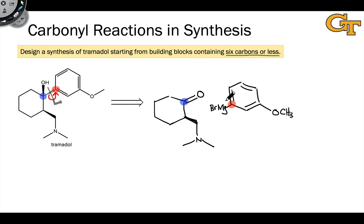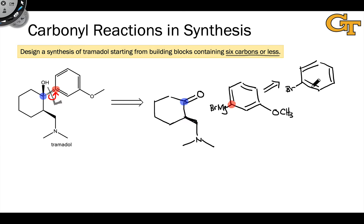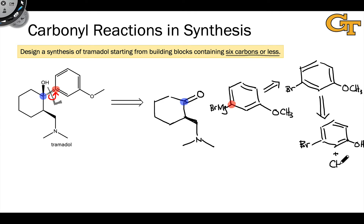Let's deal with the nucleophile first. This is a Grignard reagent, and we know that Grignard reagents can be made from the corresponding halides through an insertion process. So the starting material for formation of this Grignard reagent would be the corresponding aryl bromide with a meta-methoxy group. This has seven carbons, but it's clear we could synthesize this through a Williamson approach. So we're back to six carbons or less in these starting materials, and we've achieved our goal along that dimension.